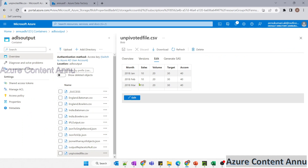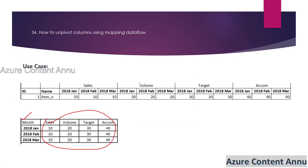So we are able to achieve this using unpivot transformation. That's it for this video, guys. I hope you like the content. Please keep practicing these scenarios in Dataflow so that it will help you in performing data transformation. Please hit the like button and subscribe to my channel. Thank you.